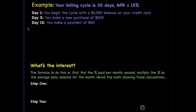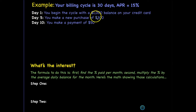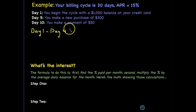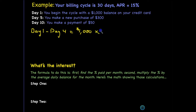Let's start to calculate your average daily balance. Remember that it's just an average, but we have to consider that there are 30 days, so there's a balance for each day. From day one through day four, you had a balance of $1,000. That's four days at $1,000, so if we multiply that by four, that's $4,000.